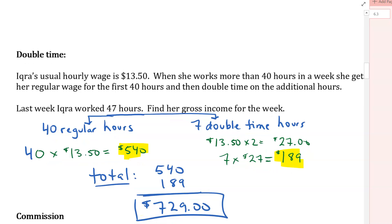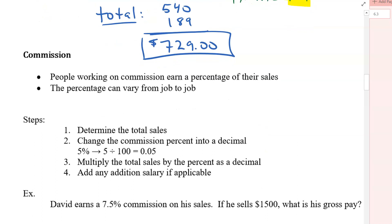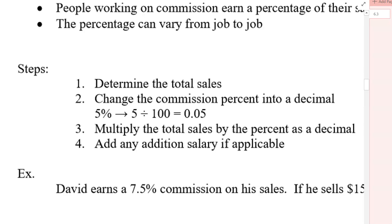Okay, now let's take a look at commission. When you get commission, you get people working on commission earn a percentage of their sales. And the percentage can vary from job to job.